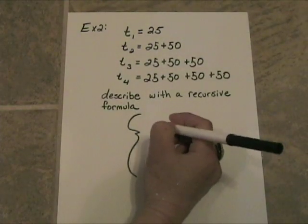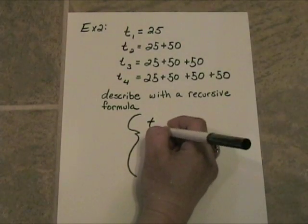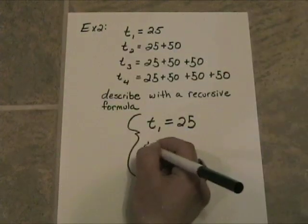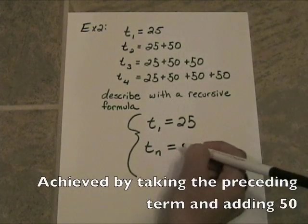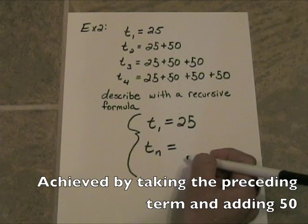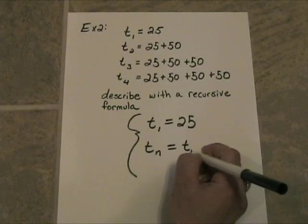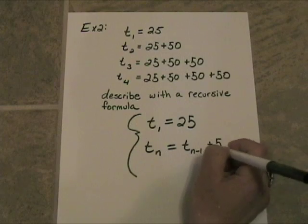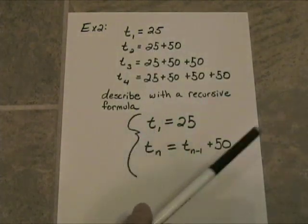So, the way we would describe this recursively is, first of all, state t sub 1. That is our starting point and we start at 25. Now, t sub n, any term in this sequence can be achieved by taking the preceding term and just adding 50. So, the preceding term would be written as t sub n minus 1 and then we add 50. So, it is just that simple. We can describe this in this manner.